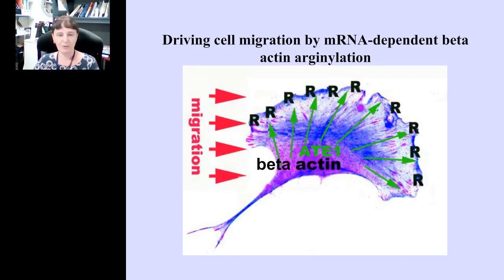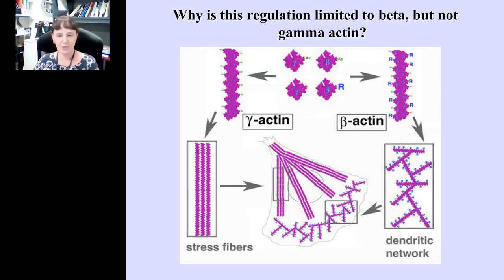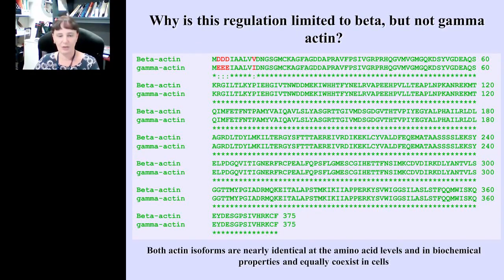So how is cell migration driven by arginylation overall? When a cell is stimulated to migrate, one of the first events is mRNA-dependent targeting of actin to the cell leading edge, and simultaneously we believe arginylation of this actin is also activated. As a result, you find a high concentration of arginylated actin at the leading edge. This arginylation then facilitates actin polymerization, resulting in formation of a massive actin network that enforces protrusion of the cell leading edge and thus facilitates migration. Impairment of this event really affects cell migration.